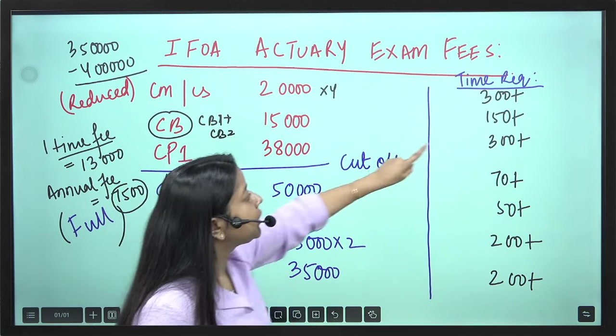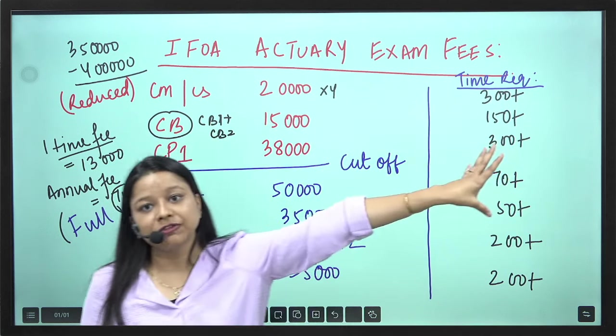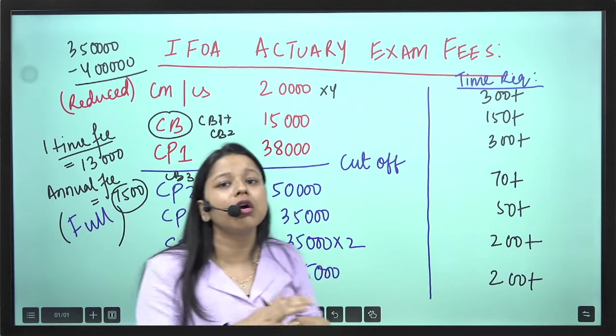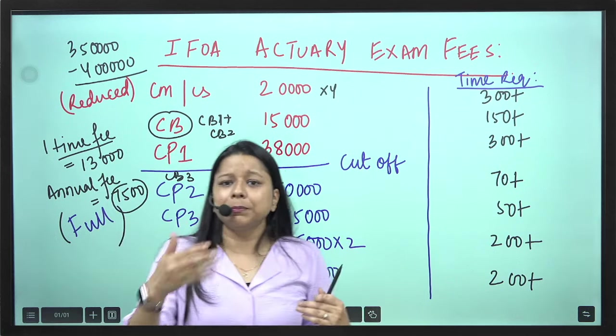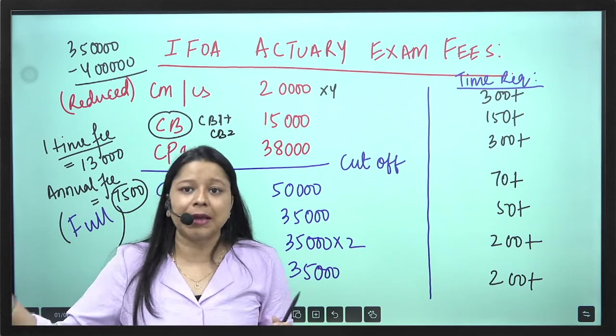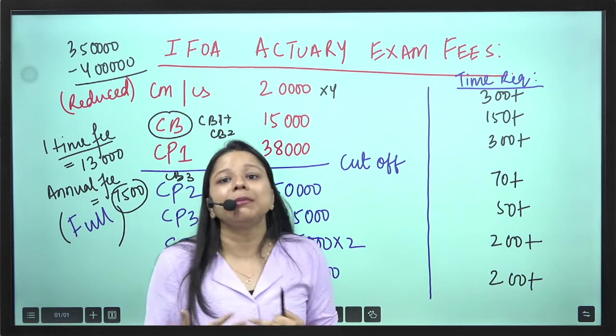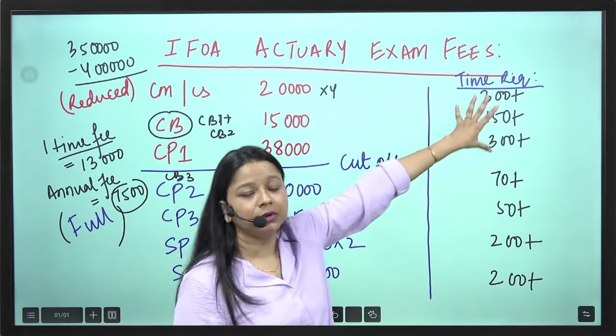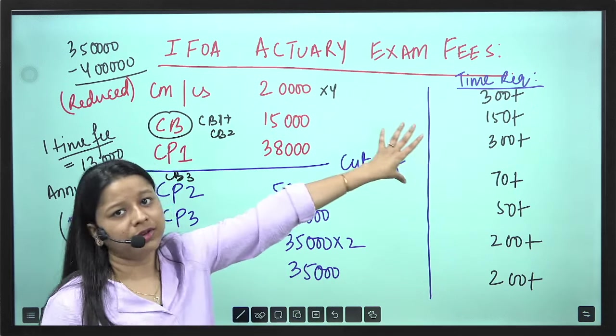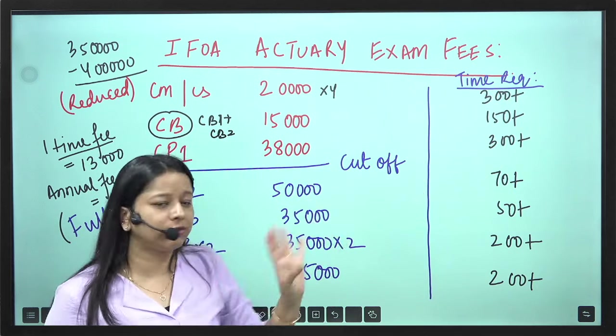For CB-1, CB-2, it is approximately 150 plus hours. CB-3 is a module based examination. You do not have to actually memorize anything. So the time will go down. It is not 150 hours. It is somewhere around 25 to 30 hours.